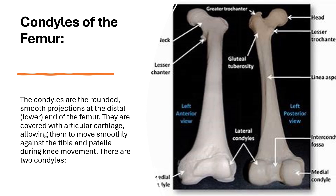The condyles help form the tibiofemoral joint, which is part of the knee joint, together with the menisci — the cartilage discs between the femur and the tibia. They allow for smooth flexion and extension of the knee.